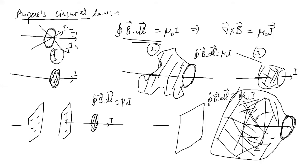The problem arises because charge is piling up on the capacitor plates. You can draw two surfaces — for the first surface the current pierces through it, but in the second case the current never touches that surface. It's like a balloon: if you place the capacitor plate inside a balloon and the balloon's mouth is open, the current-carrying wire never touches any point of the balloon's surface, and so Ampere's Circuital Law breaks down.